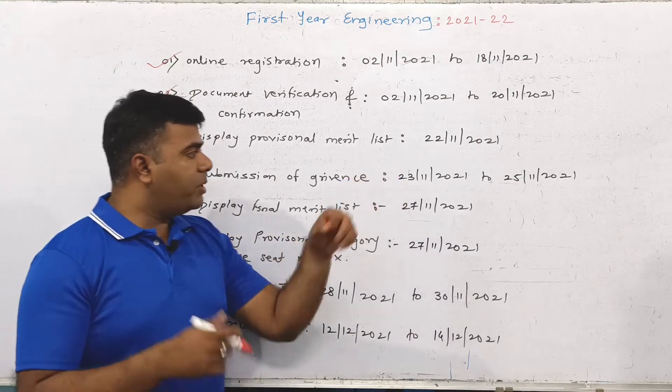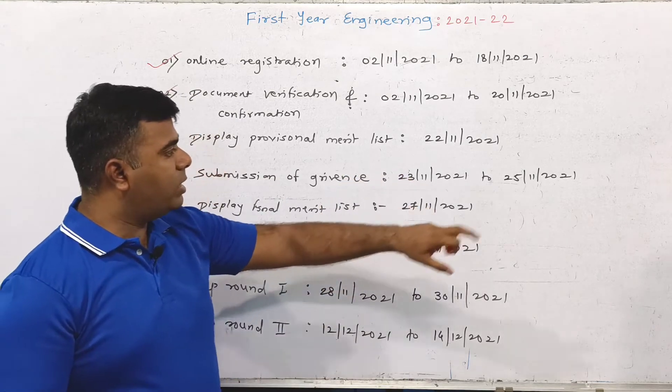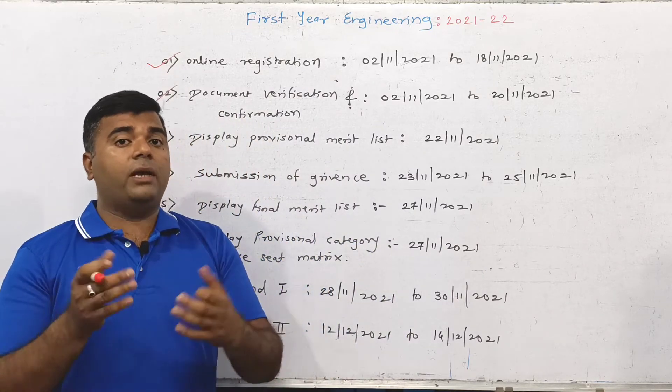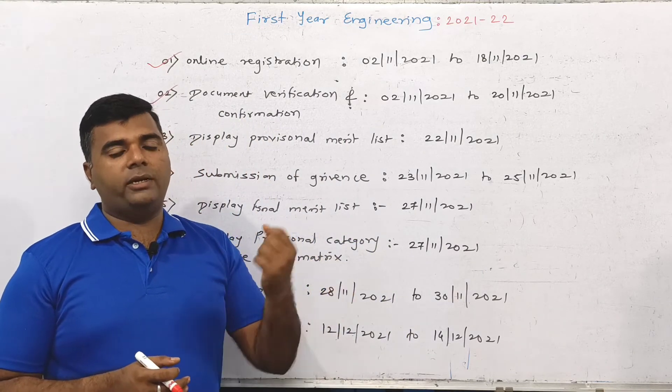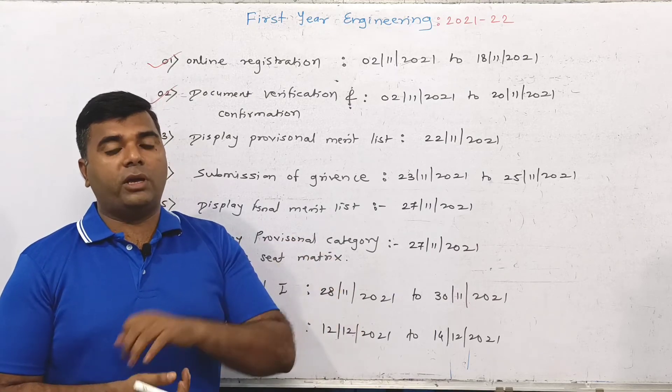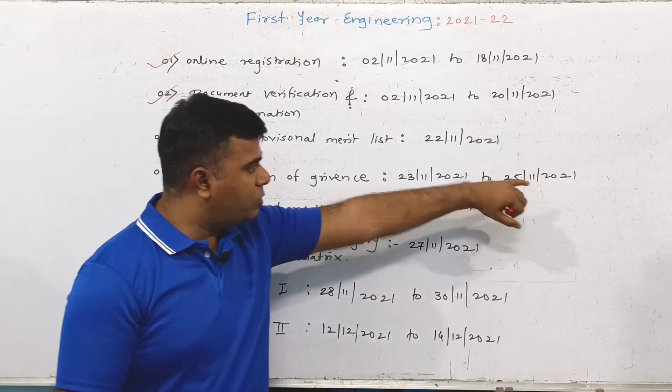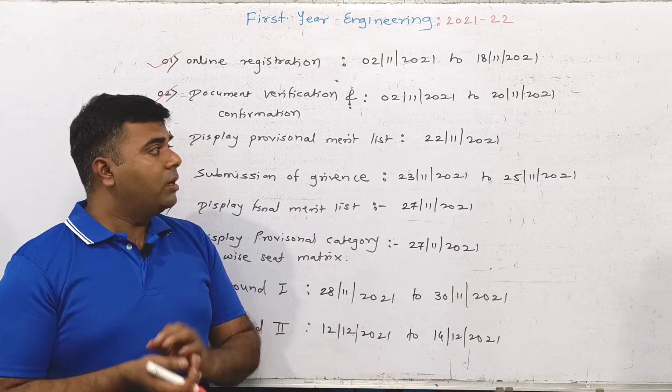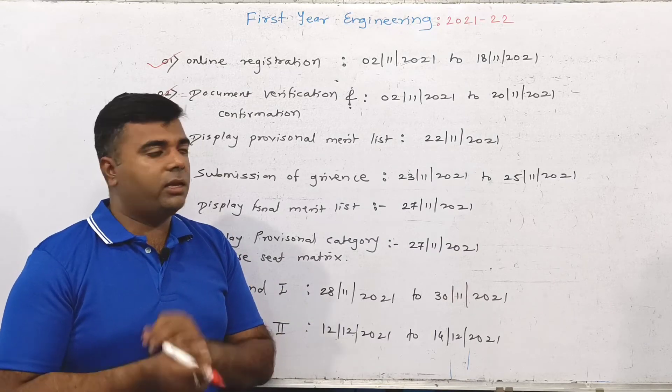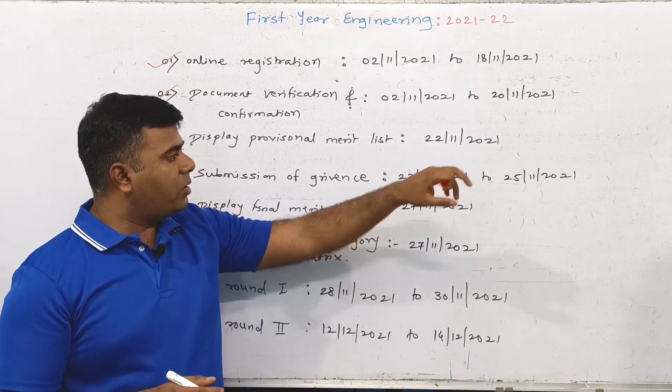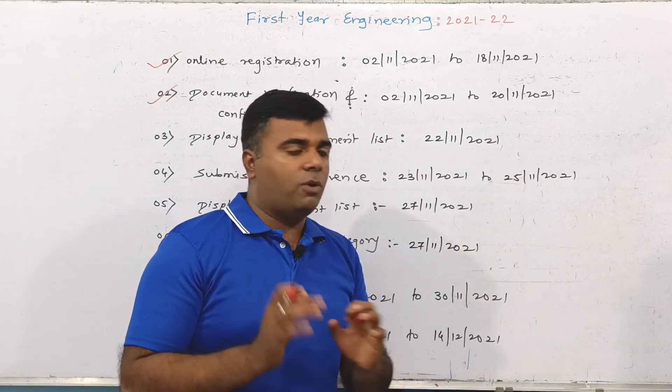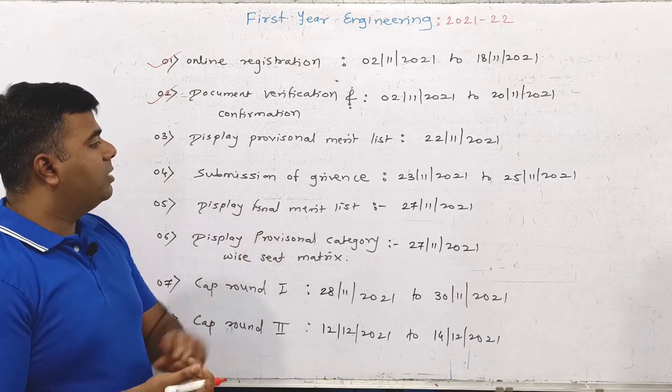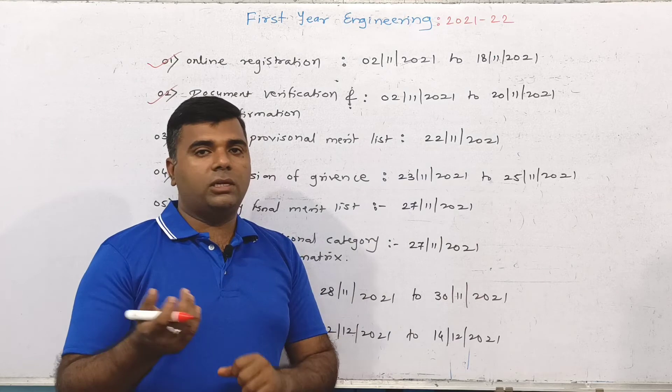Submission of grievances can be done during the period from 23rd November 2021 to 25th November 2021. If there are any mistakes or pending issues, you can upload the form and update it during the grievance period. Then the display of the final merit list will occur.